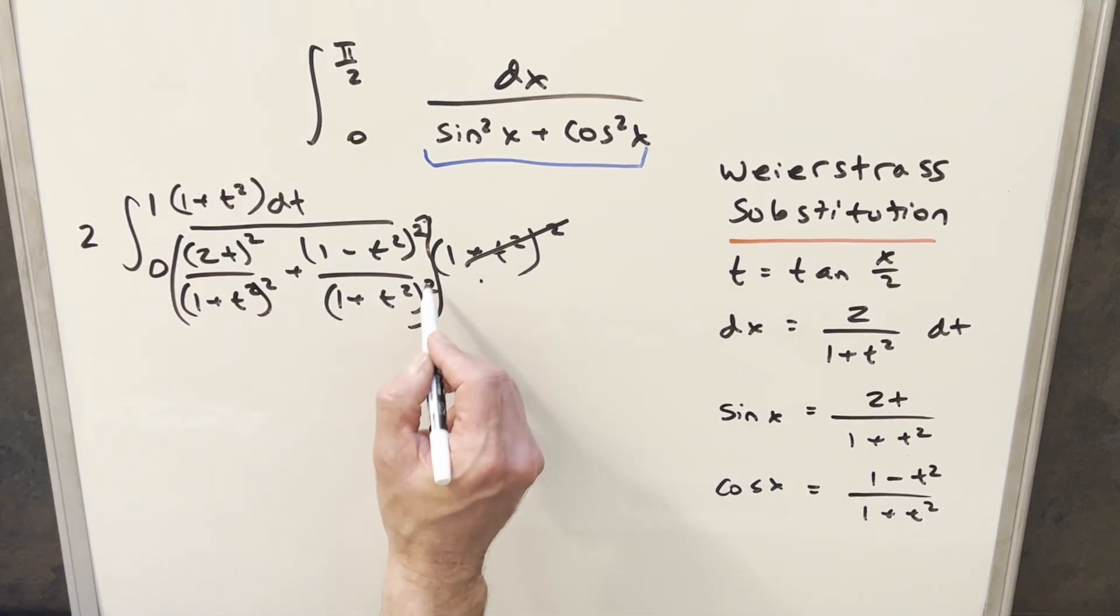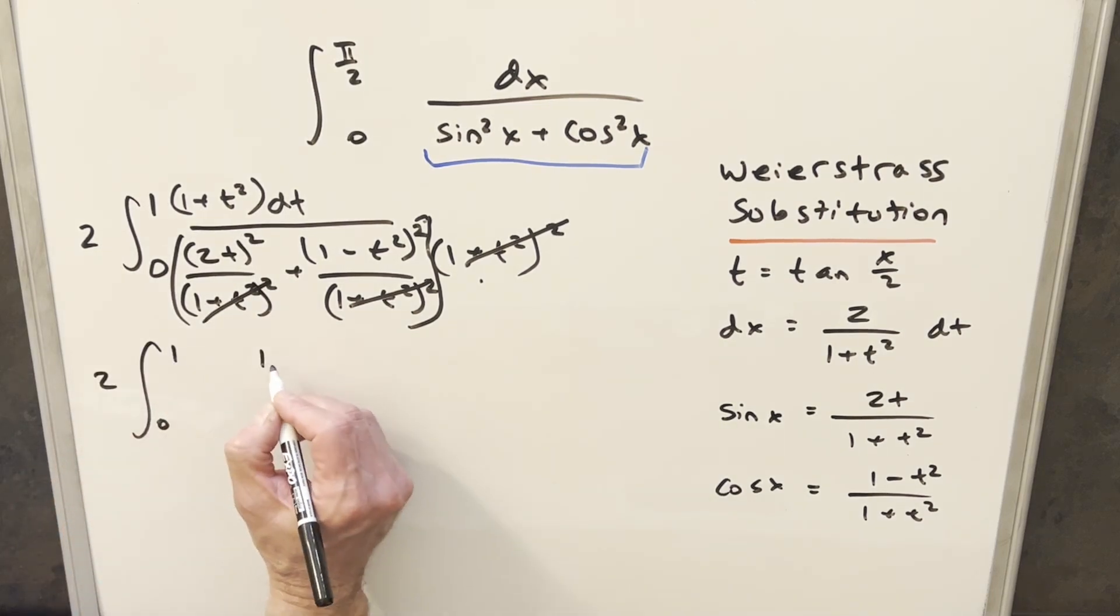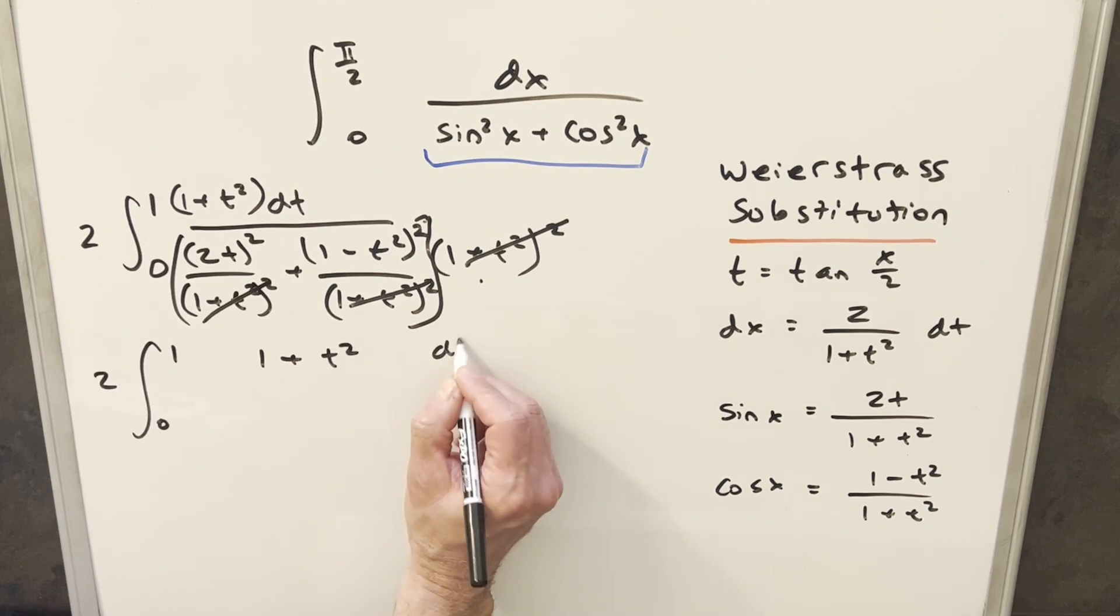Then by doing that, this is going to cancel with this and this. And now we just need to multiply everything out and clean it up. So we'll have our 2 going from 0 to 1. 1 plus t² here, dt.